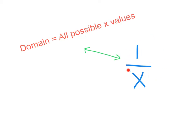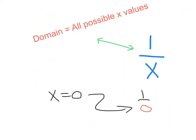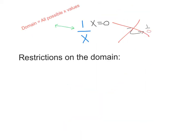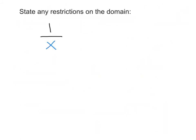So the question becomes: what does a fraction with a variable in the denominator have to do with the domain — all possible X values? Well, if X equals 0, that gives us 1 divided by 0. Dividing by 0 is a big no-no, and that brings up restrictions on the domain. X cannot equal whatever makes the denominator 0.